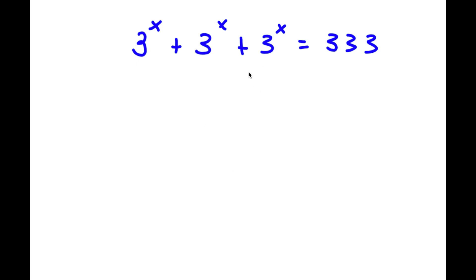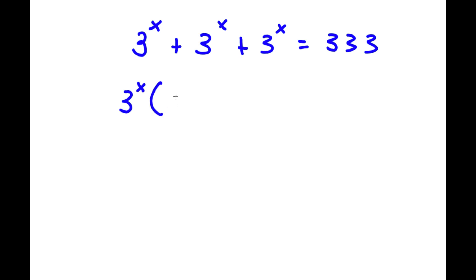In this problem, I have 3 to the power of x plus 3 to the power of x plus 3 to the power of x is equal to 333. To solve this, I'm first going to factor out 3 to the power of x from my left-hand side.